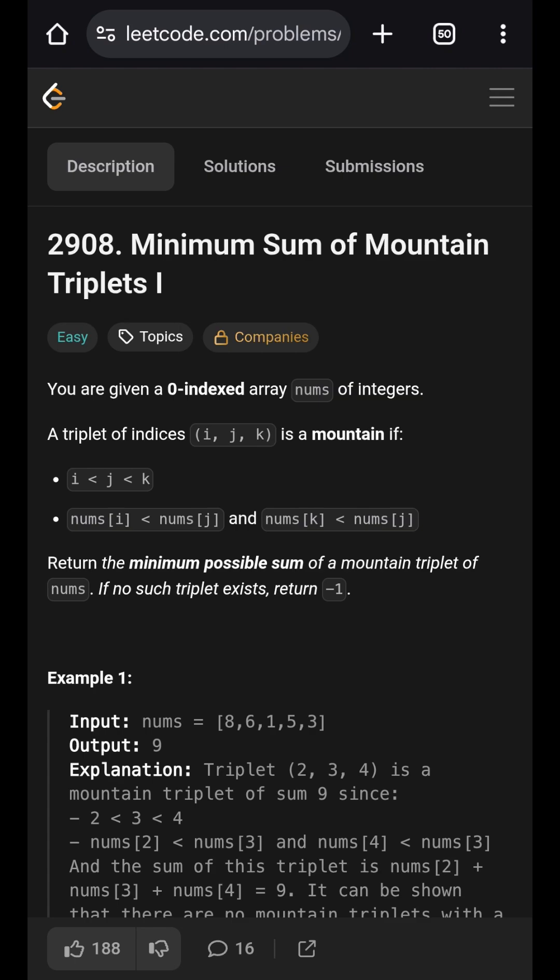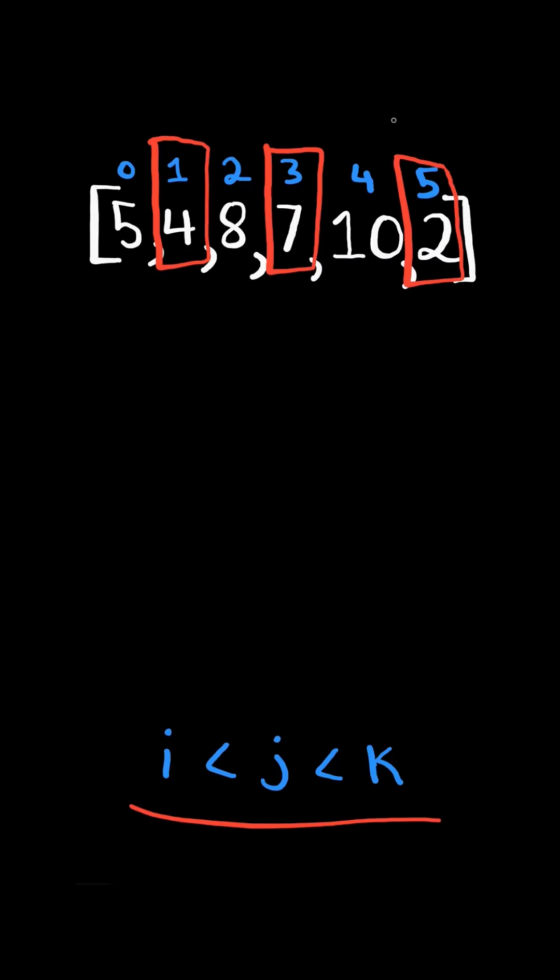Minimum sum of mountain triplets 1. Identify a triplet of indices where i is less than j and j is less than k such that the values create a mountain.